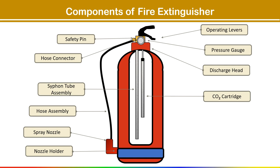When the fire extinguisher is activated by pressing the handle or lever, it punctures or opens the CO2 cartridge, releasing the compressed carbon dioxide into the cylinder. The expelled CO2 builds pressure inside the cylinder, forcing the extinguishing agent out through the discharge head or nozzle to suppress or extinguish the fire. The final component is the plastic boot, which serves as a protective cover for the bottom of the extinguisher, preventing damage to the cylinder and keeping the base clean.